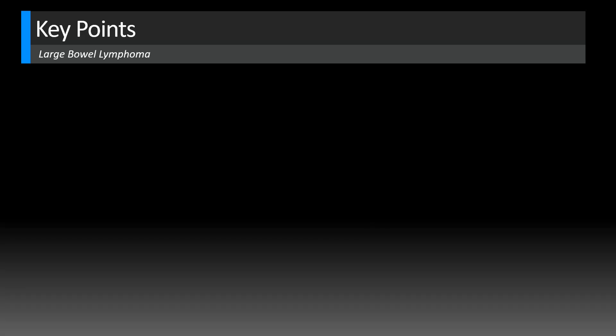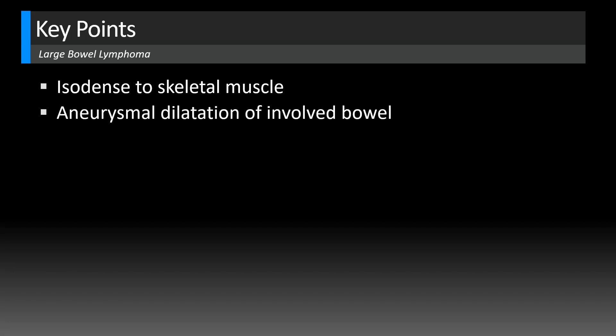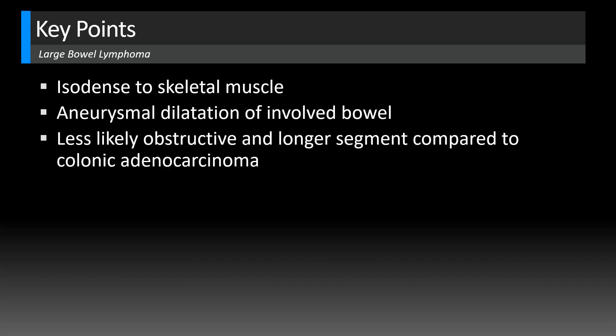Let's look at a few key points for large bowel lymphoma. It tends to be isodense to skeletal muscle — that's a good rule for abdominal pelvic lymphoma in general, whether it's involving the kidneys, liver, or bowel. There are times where it's heterogeneous, but that's less common. The growth pattern of aneurysmal dilatation of bowel, whether small or large bowel, is fairly characteristic of lymphoma.